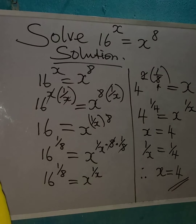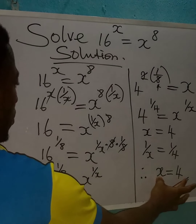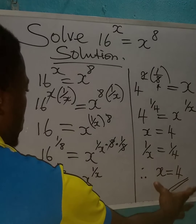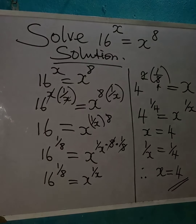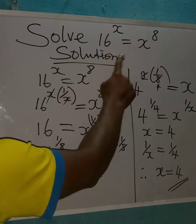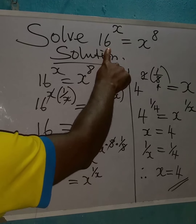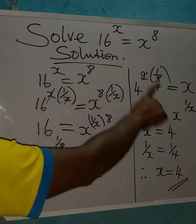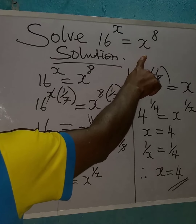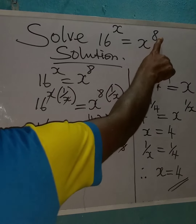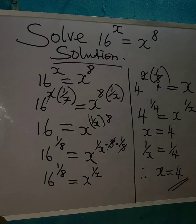You can verify this by inputting x = 4 into the original equation: 16 to the power of 4 should equal 4 to the power of 8. You can check that and let me know in the comment section. Thank you for watching.